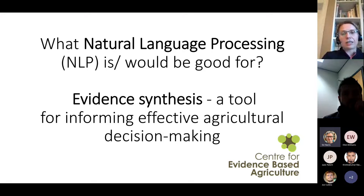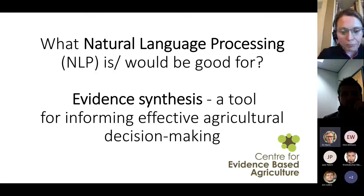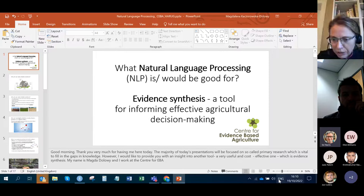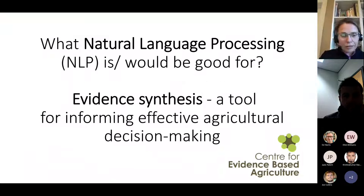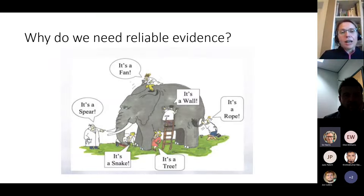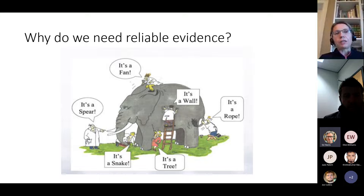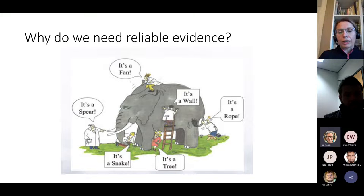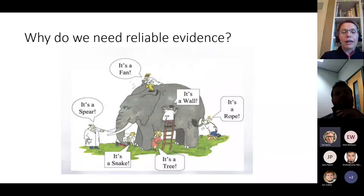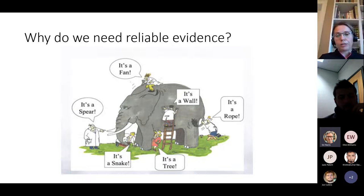Basically, evidence synthesis is a tool for informing effective agricultural decision making. So why do we need reliable evidence? Everybody in science is doing some research, but obviously as a result of time constraints everybody looks at a very limited picture. And if we don't have the broader picture, our overall conclusions might be skewed or even wrong, as we can see in this picture when we examine an elephant and the conclusions about what it really is are very different between the people who examine only part of it.